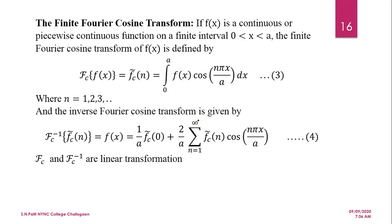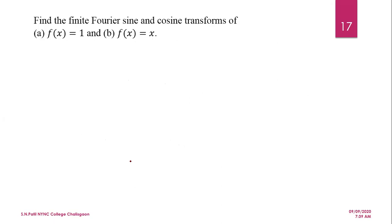The inverse cosine transform is given by f(x) equals (1/a) f̃_c(0) plus (2/a) times the summation from n=1 to infinity of f̃_c(n) cos(nπx/a). The finite Fourier sine and cosine transforms are linear transformations.